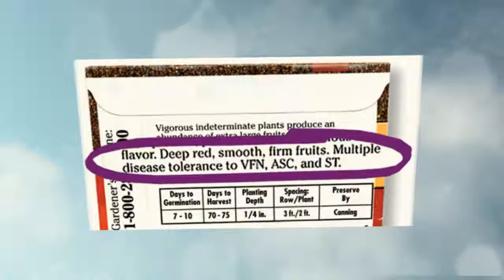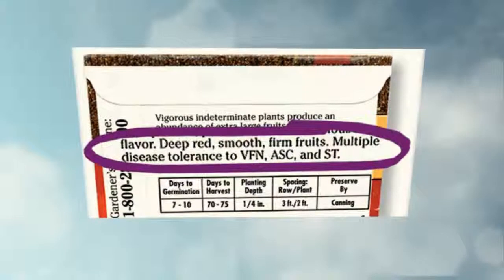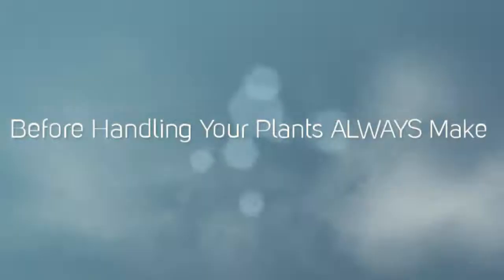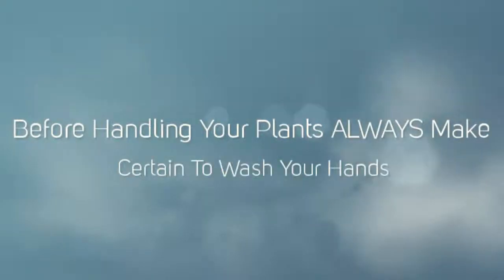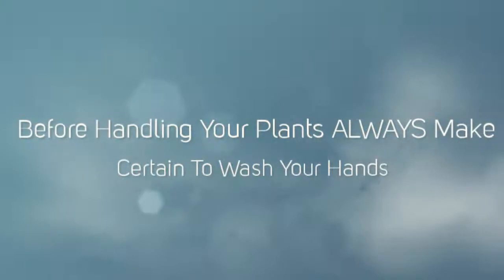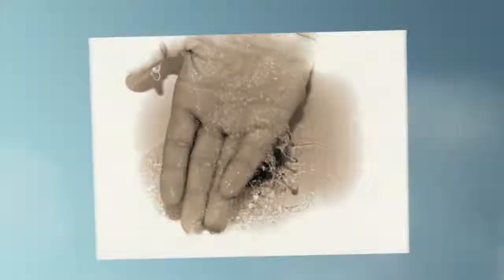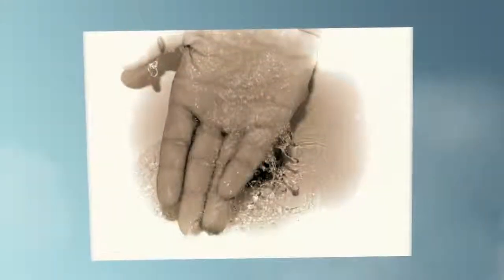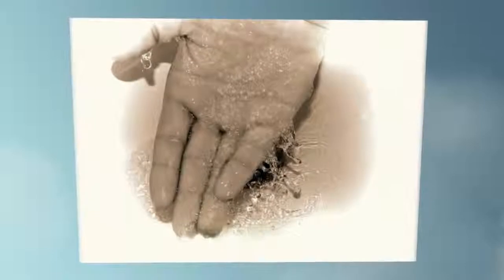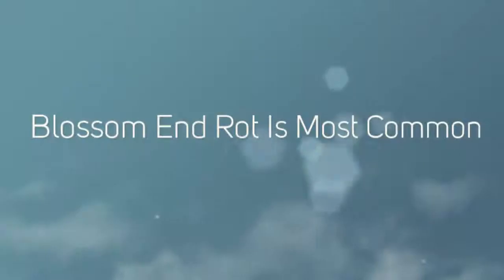When handling plants, make certain your hands are clean with soap and water. If you're using shears or knives for pruning, dip them after each plant in a weak solution of hydrogen peroxide to sterilize them.